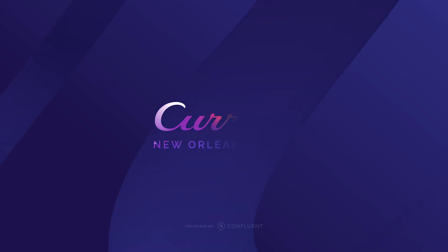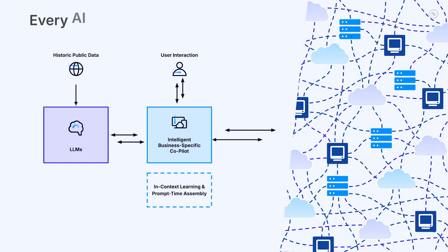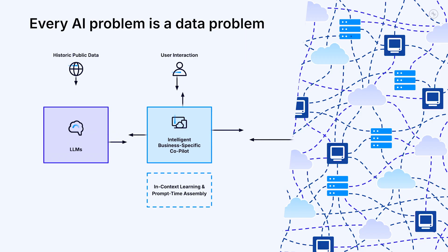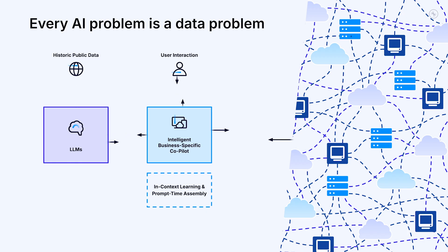AI is everywhere, but building AI that truly works in the enterprise is hard. Why? Because every AI problem is a data problem, and more specifically, a context problem. When data is missing, stale, or inaccessible, even the smartest AI agents fail. They make outdated predictions or miss key signals.